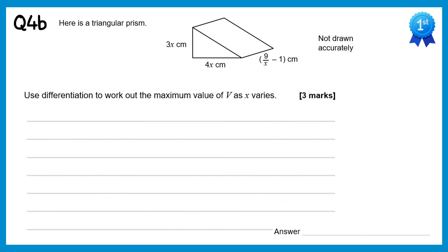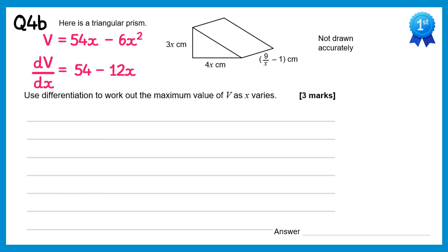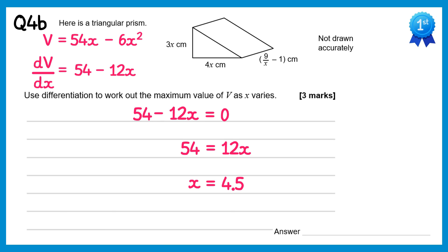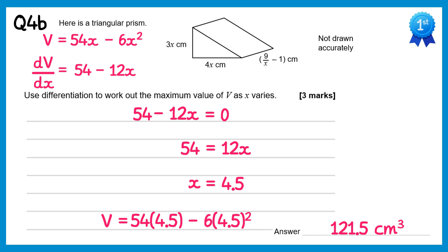Now we need to use differentiation to work out the maximum volume. We have V equals 54x minus 6x squared, so we'll find dV by dx. Differentiating 54x gives 54 and differentiating negative 6x squared gives negative 12x. When it's the maximum value of V this must equal 0. Adding 12x to both sides gives 54 equals 12x. Dividing both sides by 12 gives x equals 4.5. Substituting back in: V equals 54 times 4.5 take away 6 times 4.5 squared, which gives 121.5 centimeters cubed.